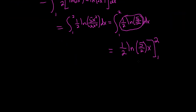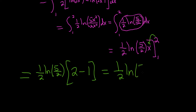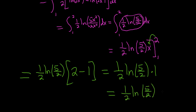We evaluate 1/2 ln(5/2) times x from 1 to 2. Plugging in 2 gives 1/2 ln(5/2) times 2, and subtracting the plug-in of 1 gives 1/2 ln(5/2) times 1. So 2 minus 1 is 1, and the final answer is just 1/2 times the natural log of 5/2. That is the correct answer.